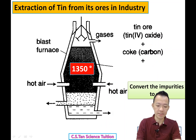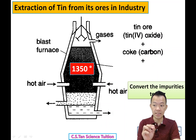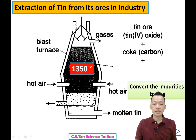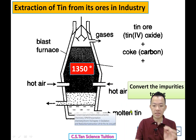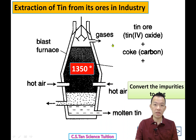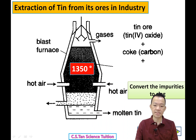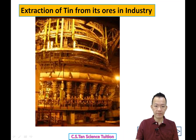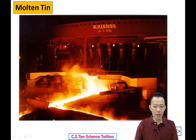Tin finally will be reduced — tin oxide will be reduced into tin only. So this is the chemical reaction that takes place inside the Blast Furnace. The molten tin will be formed, and the molten tin will sink to the bottom of the Blast Furnace and come out from that side.